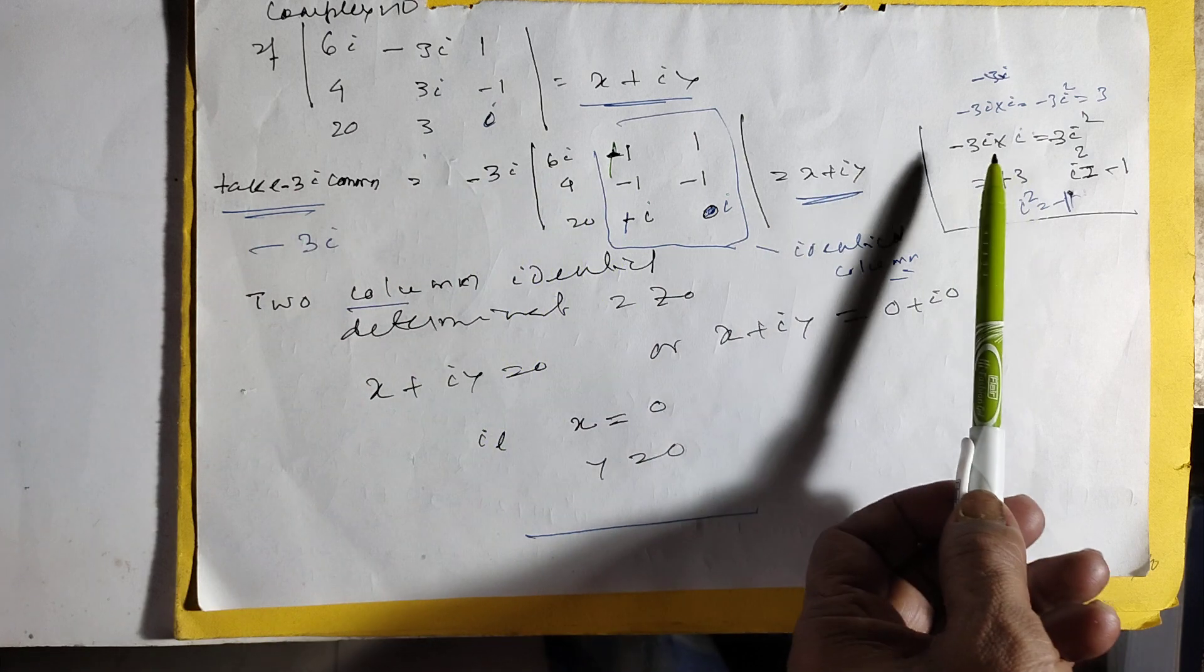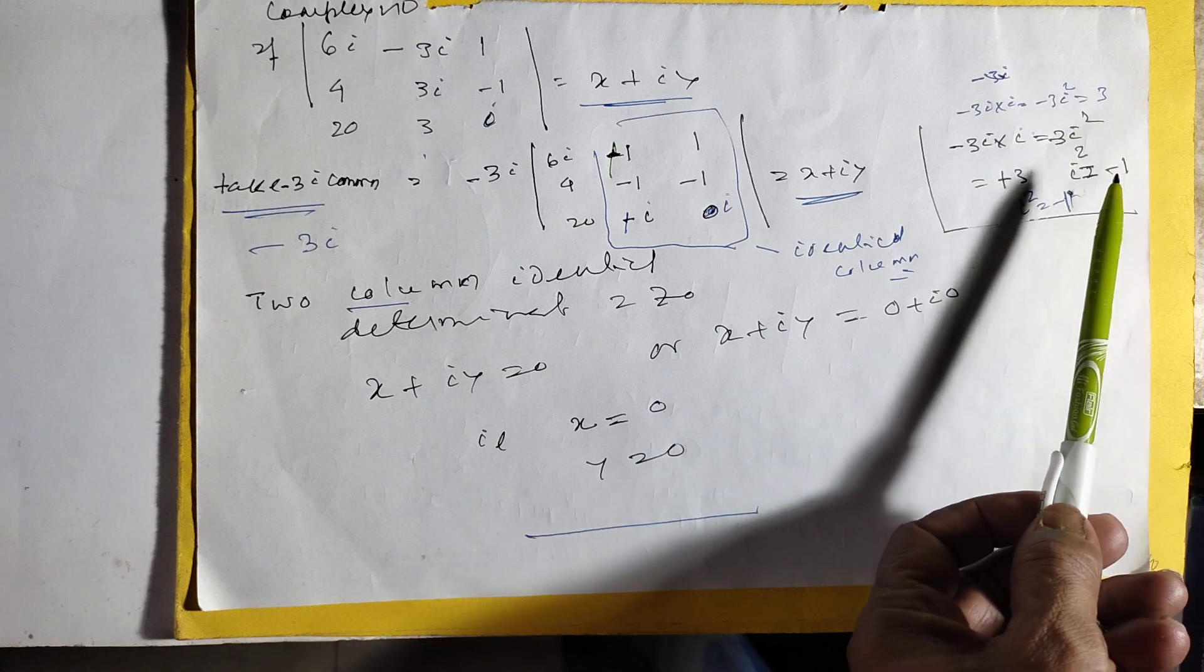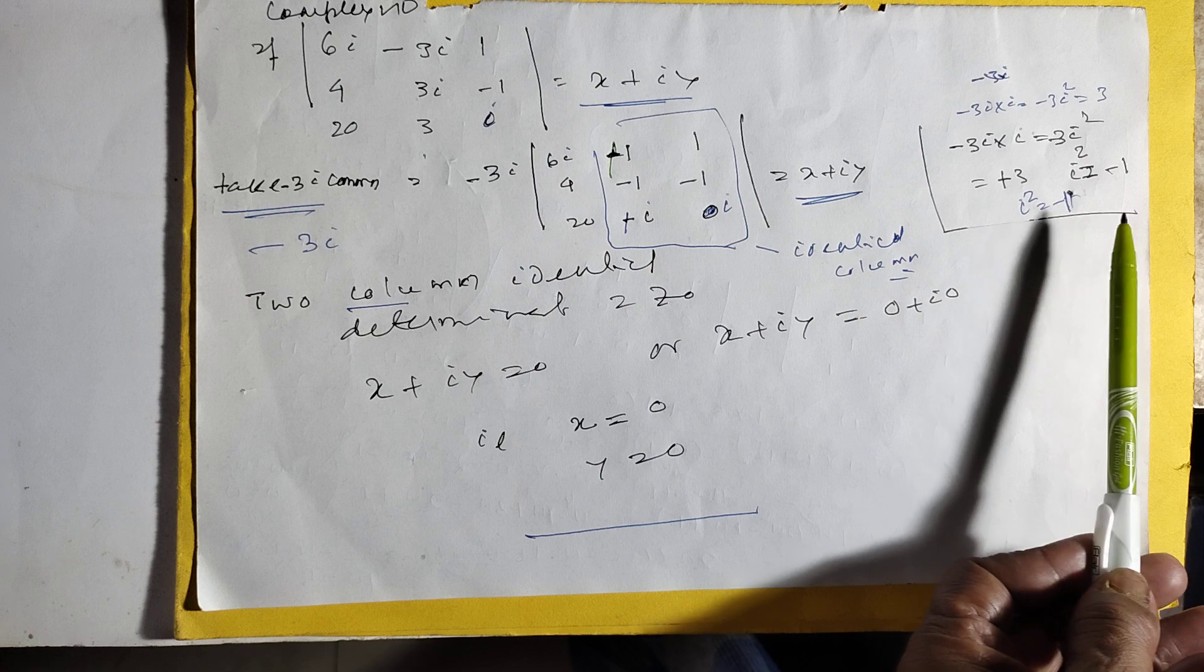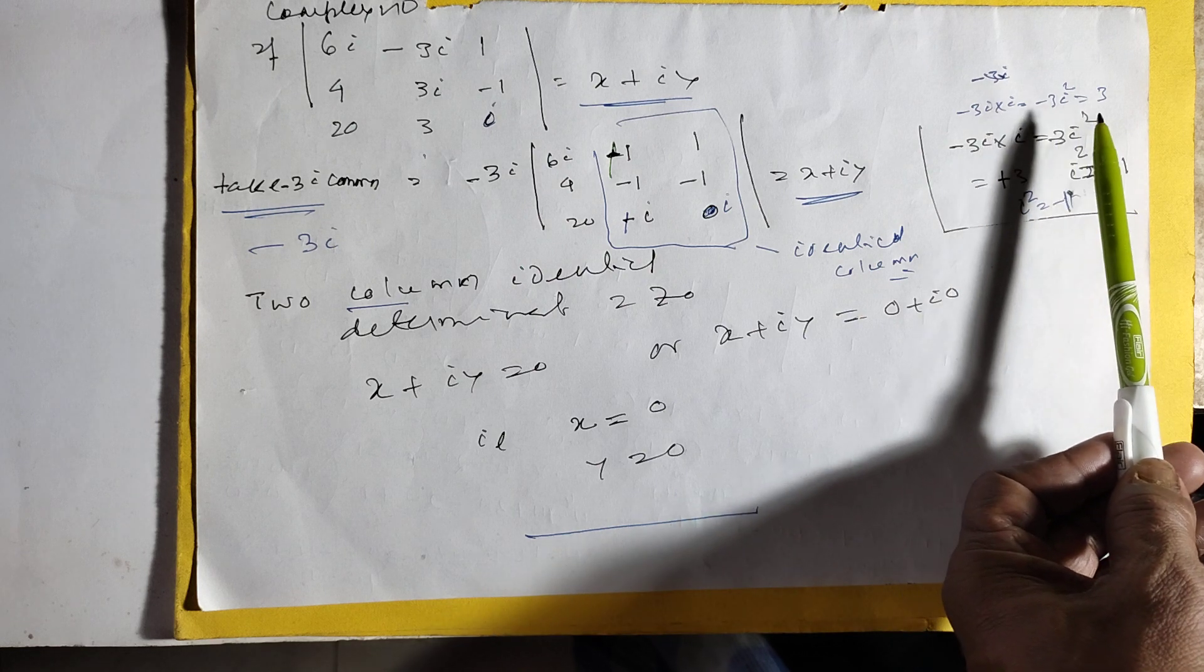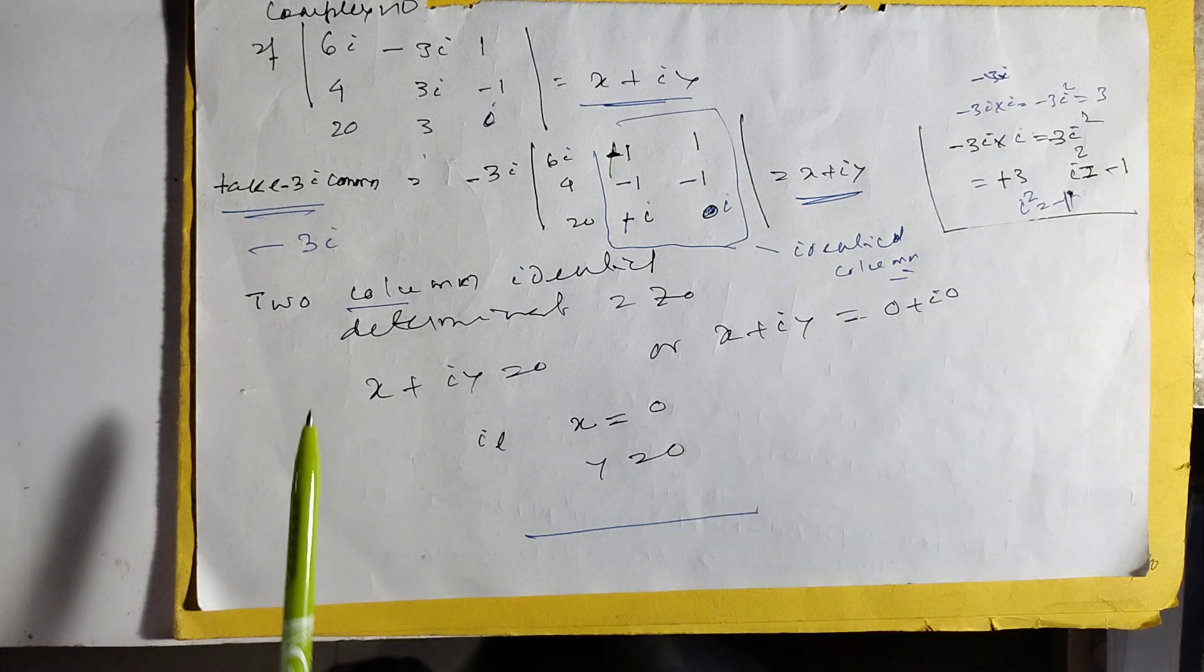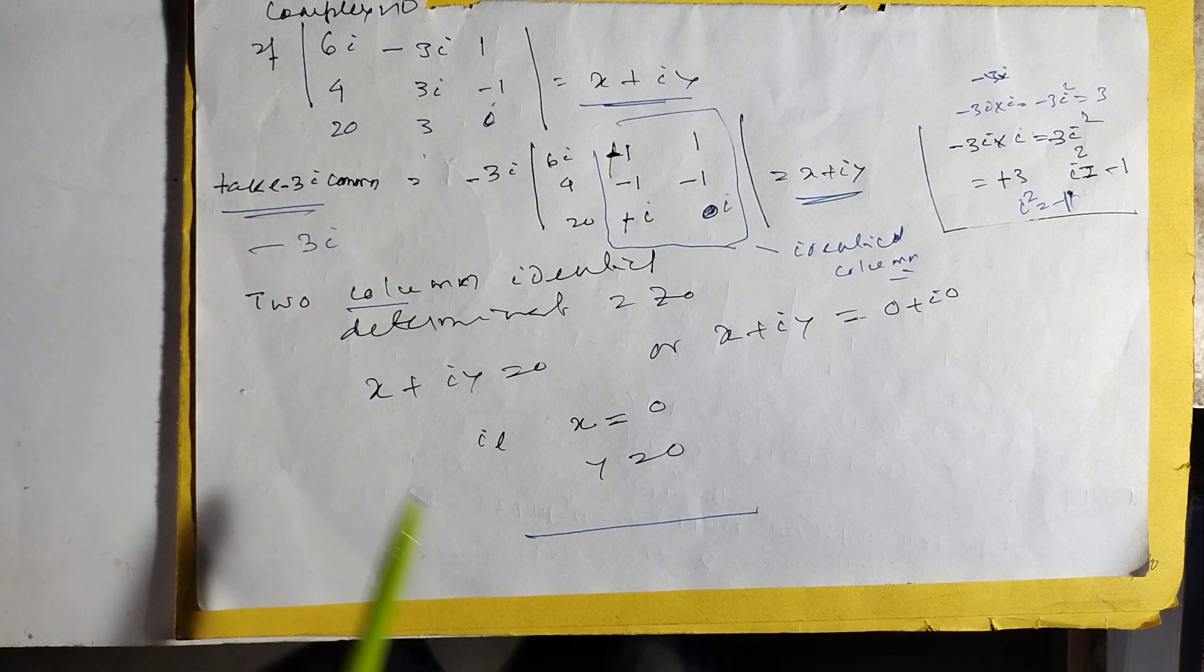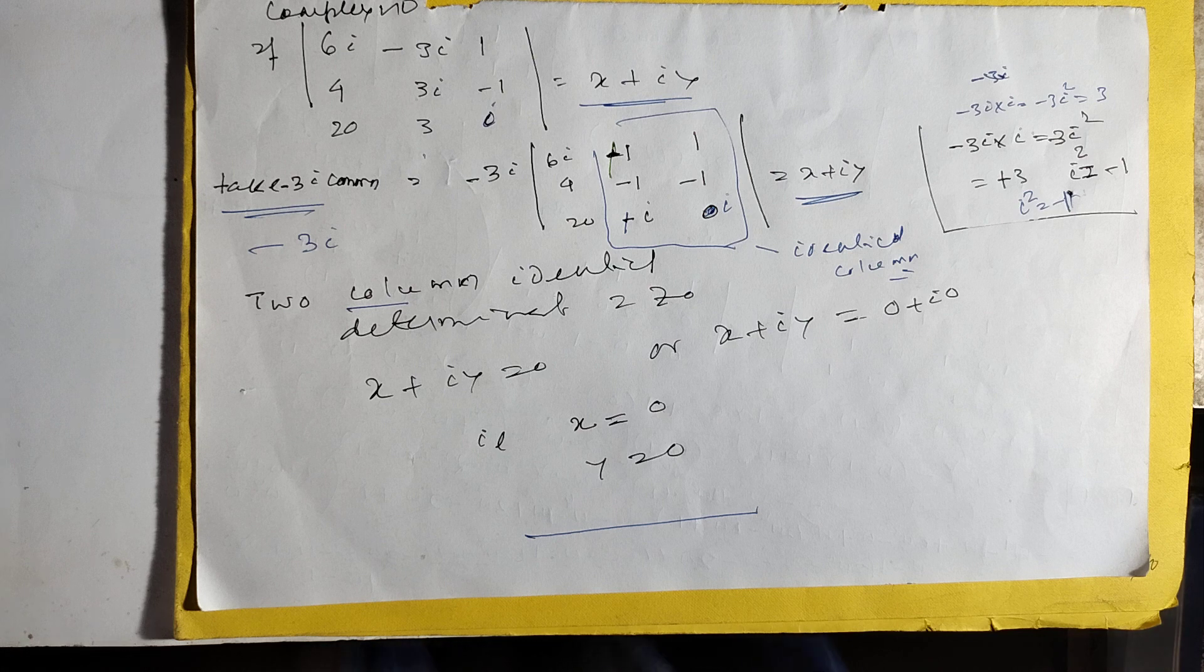3i minus 3i into i is equal to minus 3i square. I already know minus iota square is equal to minus 1. So minus 3i square is equal to 3. So automatically, here two columns are equal, so the determinant is 0. So x is equal to 0, y is equal to 0. Completed.